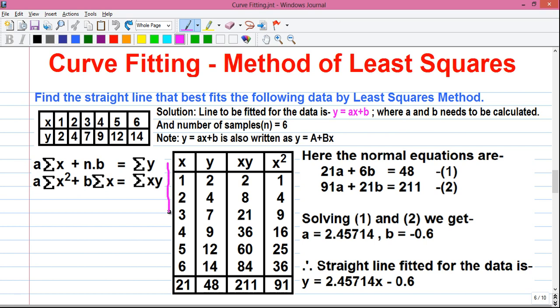In first column, I have written all the x values given in the table. In the second column, I have written all the y values given in the table. And the third column is x into y. So in our first row, x is 1, y is 2, so xy is 1 into 2, which is 2. In second row, x is 2, y is 4, so x into y is 8. Similarly, we can find out the remaining x into y values.